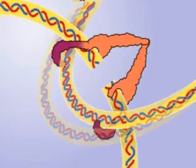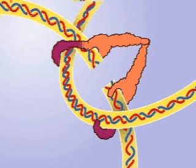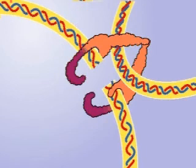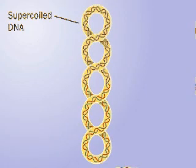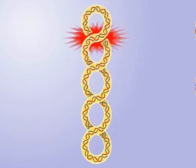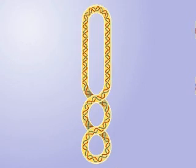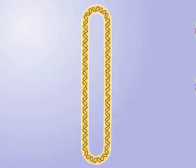Topoisomerase II cuts both strands of a double-stranded DNA and passes another double strand through the break and then reseals the break. So if a molecule of DNA is supercoiled, topoisomerase II can remove the supercoiling, two twists at a time, to yield a relaxed circle.